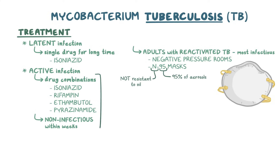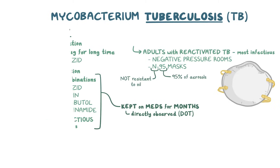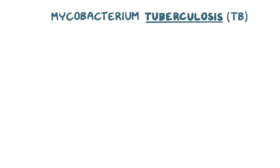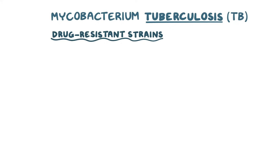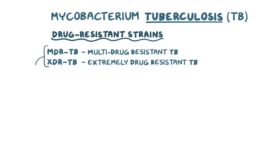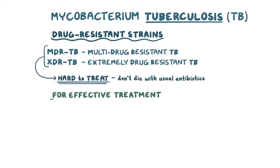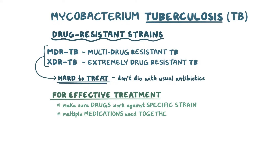Even after patients are no longer contagious, they're typically kept on multiple medications for many months to be sure the bacteria are destroyed, usually with directly observed therapy, or DOT, where somebody watches and confirms that you're taking the medication. Additionally, there's an enormous worry about new drug-resistant strains of TB. You might hear of MDR-TB, or multi-drug-resistant TB, or even XDR-TB, which is extremely drug-resistant TB — incredibly hard to treat because they don't respond to our usual antibiotics. It's super important to ensure the drugs being used will work against the specific strain, that multiple medications are used together to prevent resistance, and that medications are used for the entire course of therapy.